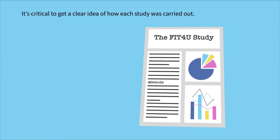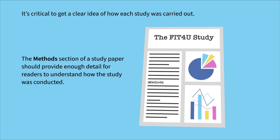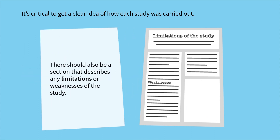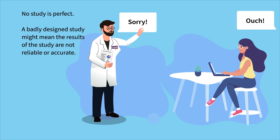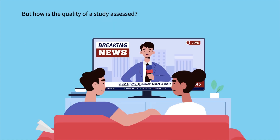It's critical to get a clear idea of how each study was conducted. The methods section of a study paper should provide enough detail for readers to understand how the study was conducted. There should also be a section that describes any limitations or weaknesses of the study. No study is perfect. A badly designed study may mean the results of the study are not reliable or accurate.